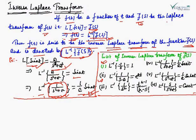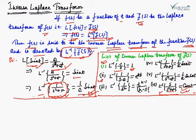For example, the Laplace transform of 1 is 1/S, so the inverse Laplace transform of 1/S equals 1. Similarly, the Laplace transform of cos(AT) equals S/(S² + A²). Therefore, reversing it, L⁻¹{S/(S² + A²)} = cos(AT). This is formula number 10 in the table.